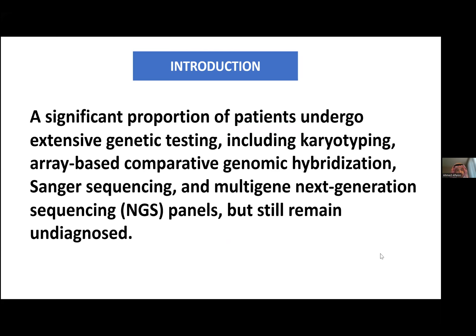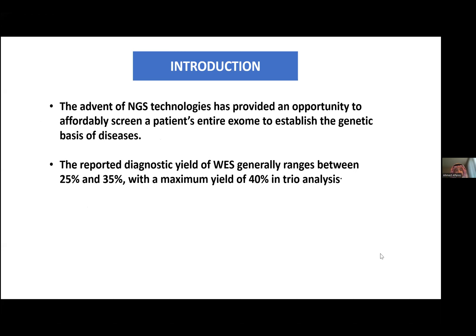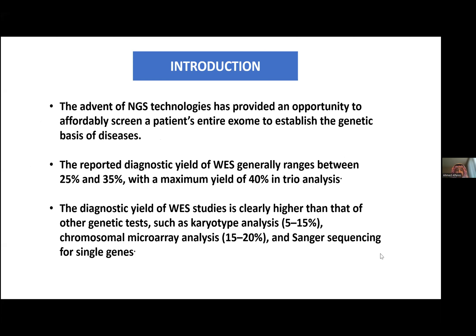The advantage of next-generation sequencing technology tries to solve this by filling gaps. It can provide the opportunity to test the entire exome for an individual. In our region, the reported diagnostic yield of an exome could range from 25 to 35%, with some reports up to 40%, and some claiming 50% in trio analysis. We know that exome sequencing provides a higher yield compared to any other diagnostic modalities in genetic testing.